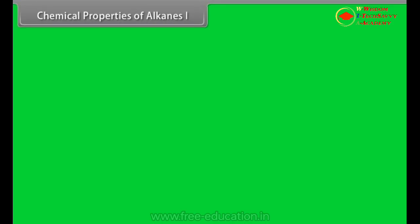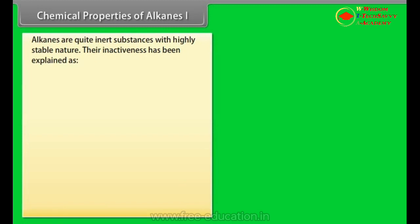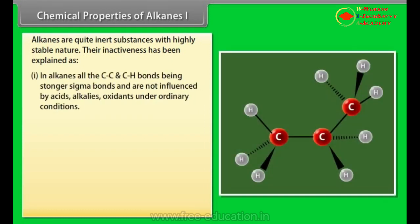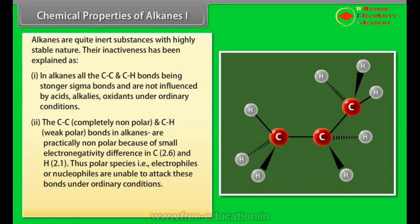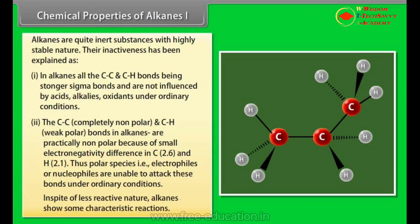Chemical Properties of Alkanes Part 1. Alkanes are quite inert substances with highly stable nature. Their inactiveness has been explained as: Number 1: In alkanes all the carbon-carbon and carbon-hydrogen bonds being stronger sigma bonds are not influenced by acids, alkalis, oxidants under ordinary conditions. Number 2: The carbon-carbon completely nonpolar and carbon-hydrogen weak polar bonds in alkanes are particularly nonpolar because of small electronegativity difference in C (2.6) and H (2.1). Thus, polar species, i.e., electrophiles and nucleophiles are unable to attack these bonds under ordinary conditions. In spite of less reactive nature, alkanes show some characteristic reactions.